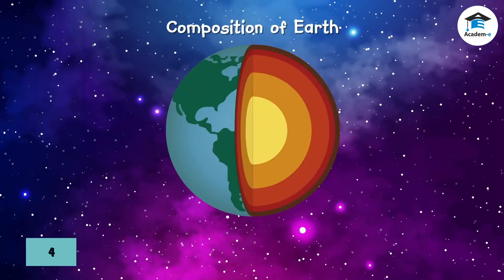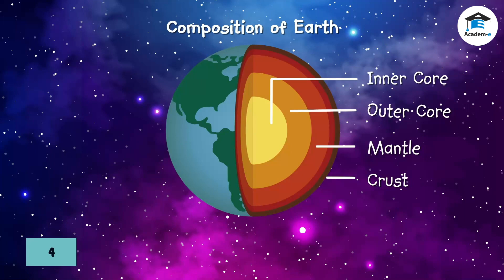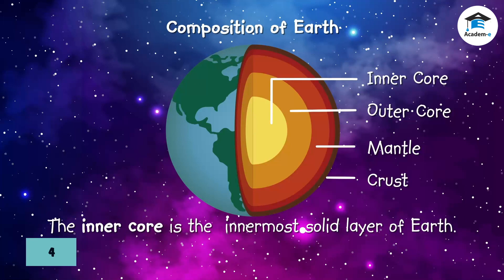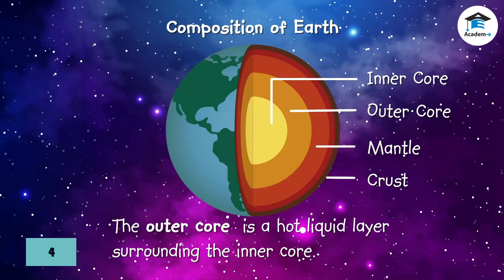Composition of Earth: The Earth has four main layers - the inner core, the outer core, the mantle, and the crust. The inner core is the innermost solid layer made up of iron-nickel alloy, as hot as the surface of the sun and capable of melting metals within it. The outer core is a hot liquid layer surrounding the inner core, also made up of iron and traces of other metals and elements.